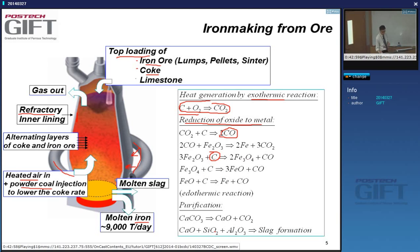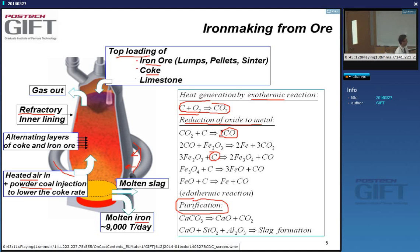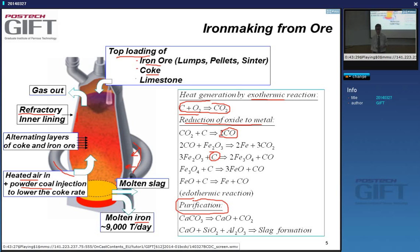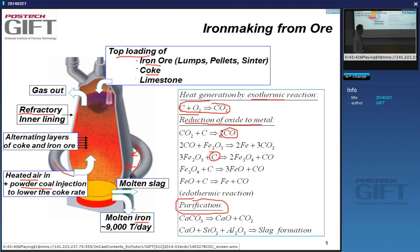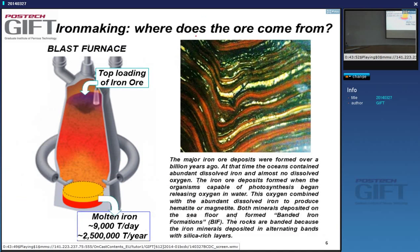The ore material we add contains not only iron oxide but also silica, alumina, etc. We need to separate this from our metal by adding lime — calcium oxide — which reacts with silica and alumina to form a liquid slag. Because the slag is an oxide with very low density compared to iron, it floats on top and can be removed. A modern blast furnace produces about 9,000 tons per day — 2.5 million tons of iron per year — operating around the clock for 10–15 years depending on lining wear.